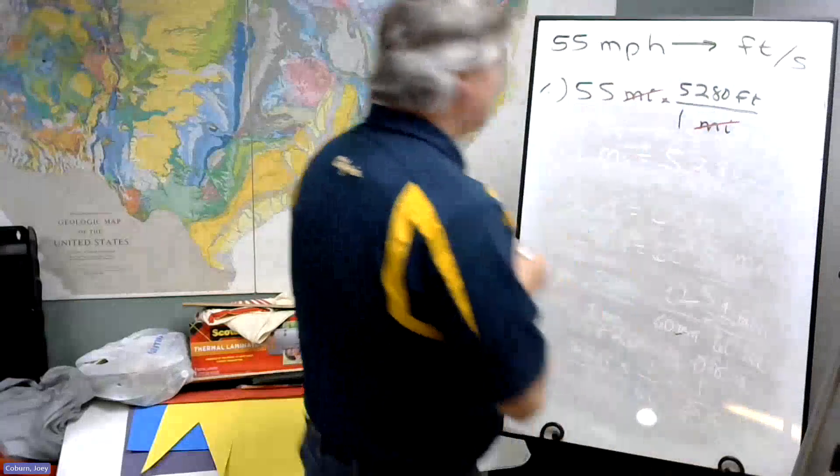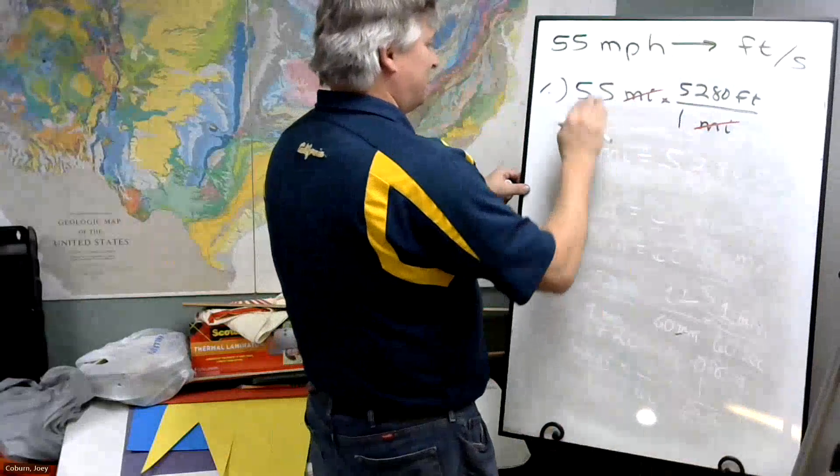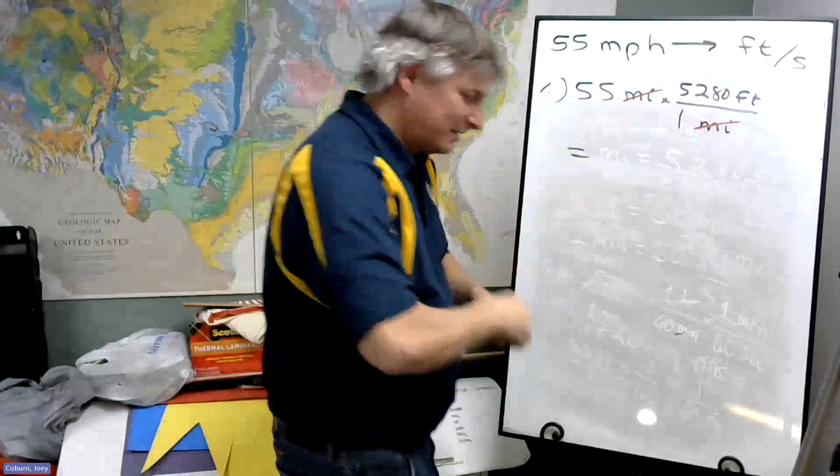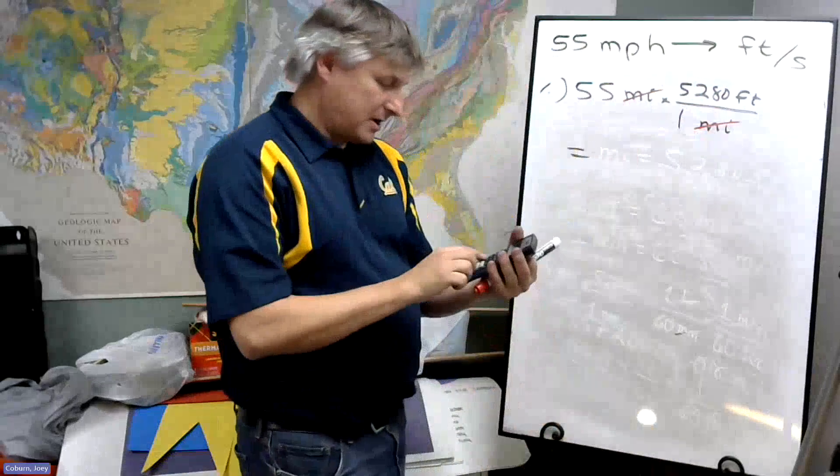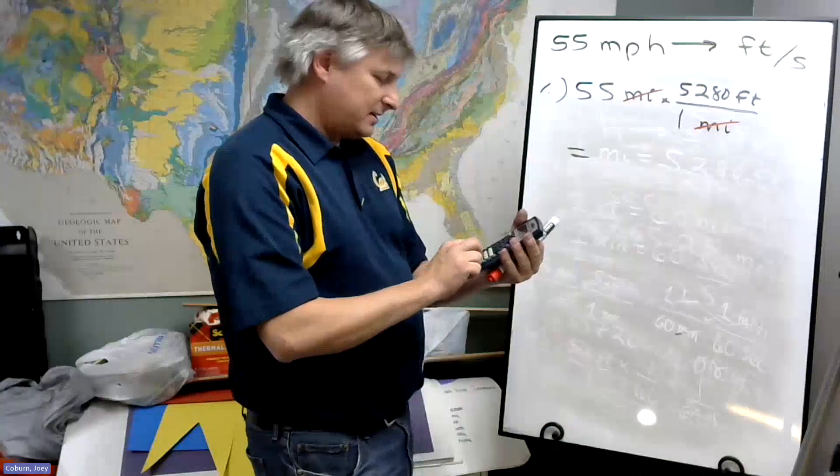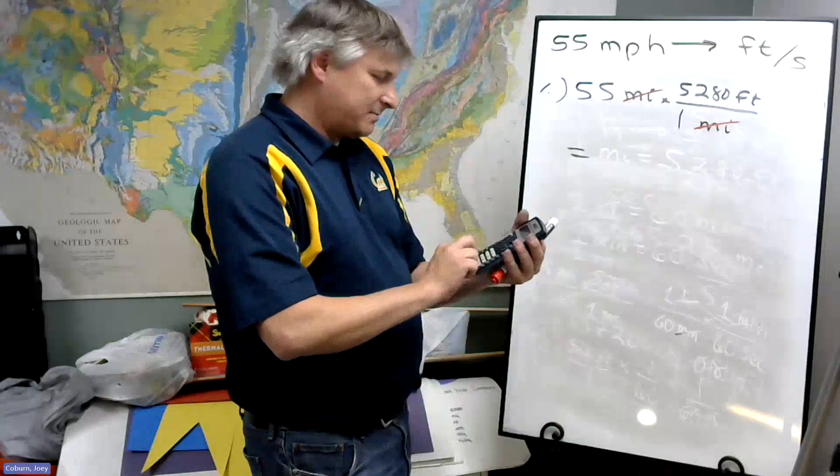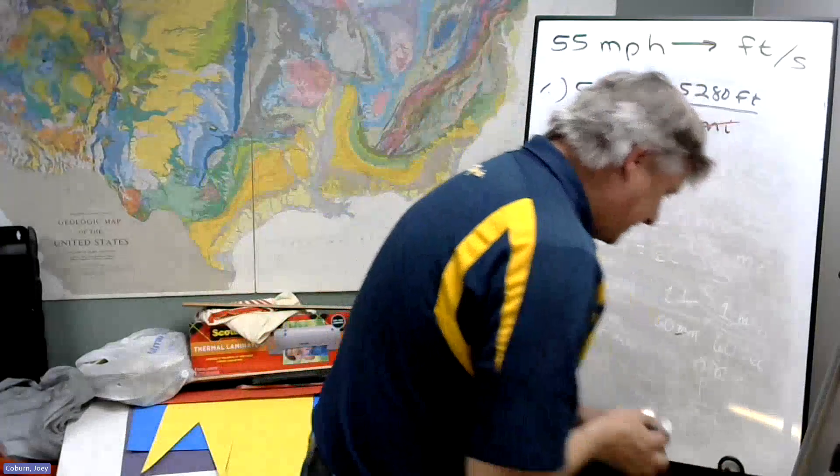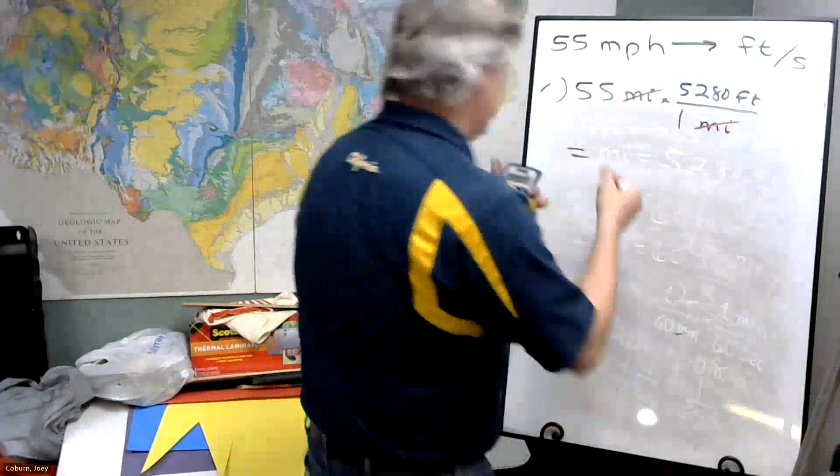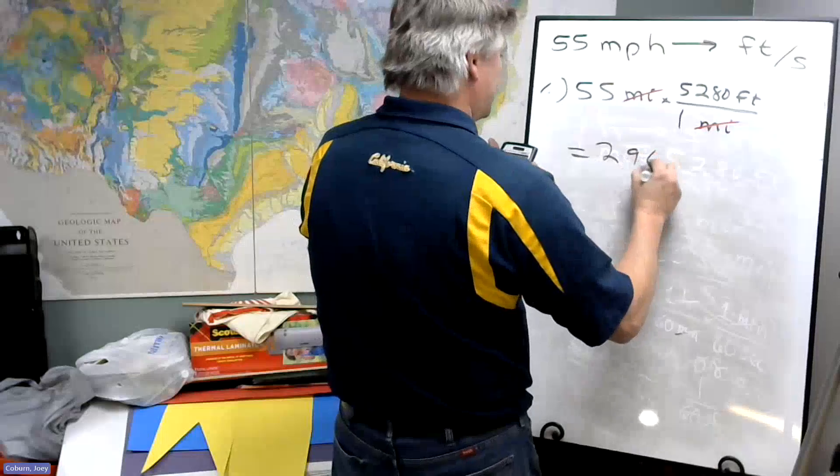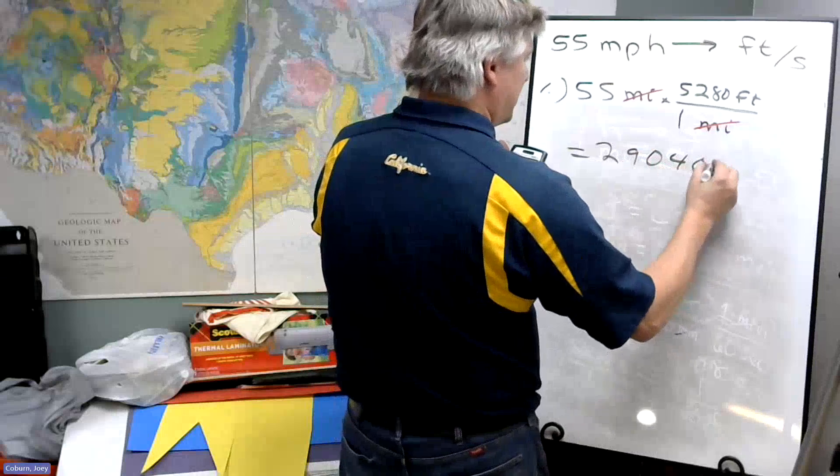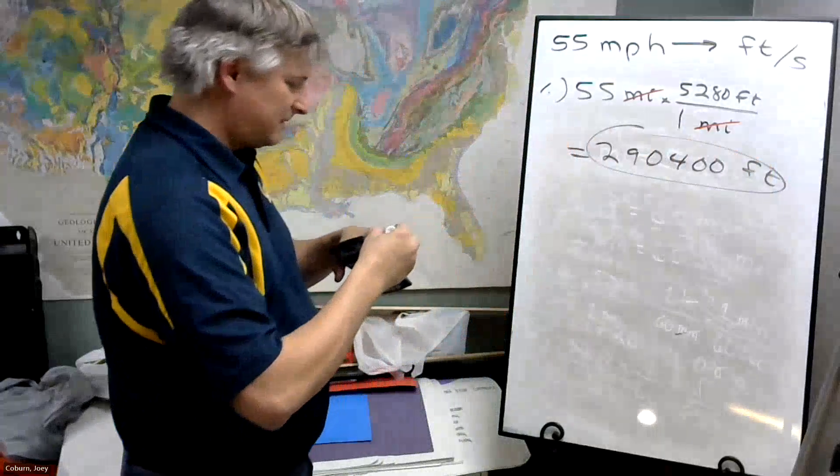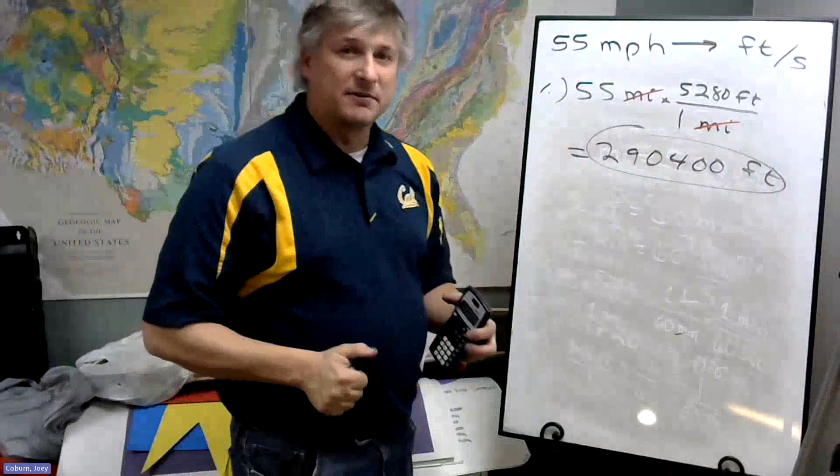And so what we have in the end: 55 times 5,280 feet divided by one. So my calculator, I'll put in 55 times 5,280 divided by one, and then just tack on feet. And the answer I get is 290,400 feet. So I'm going to put that off to the side.